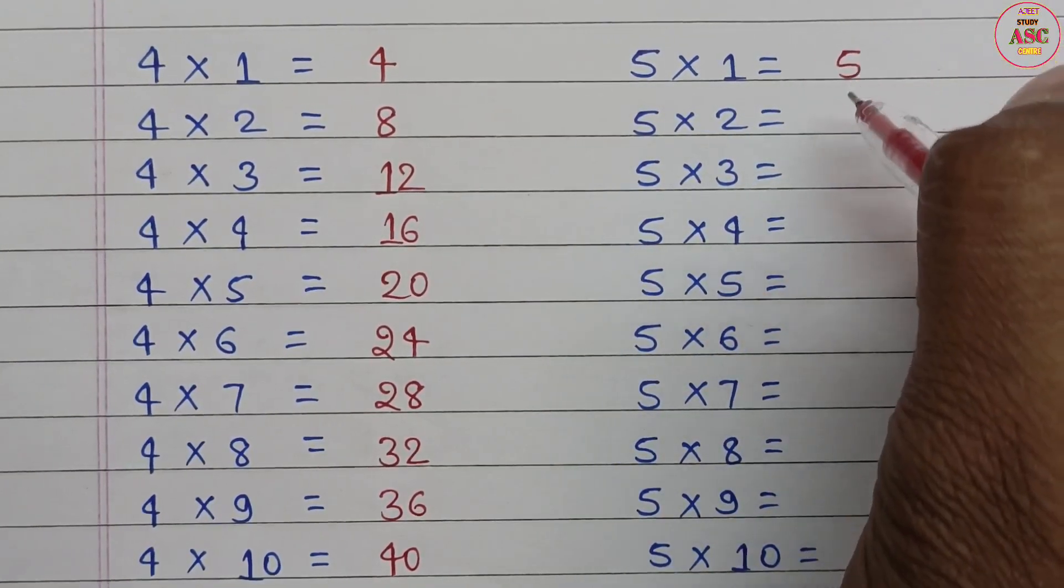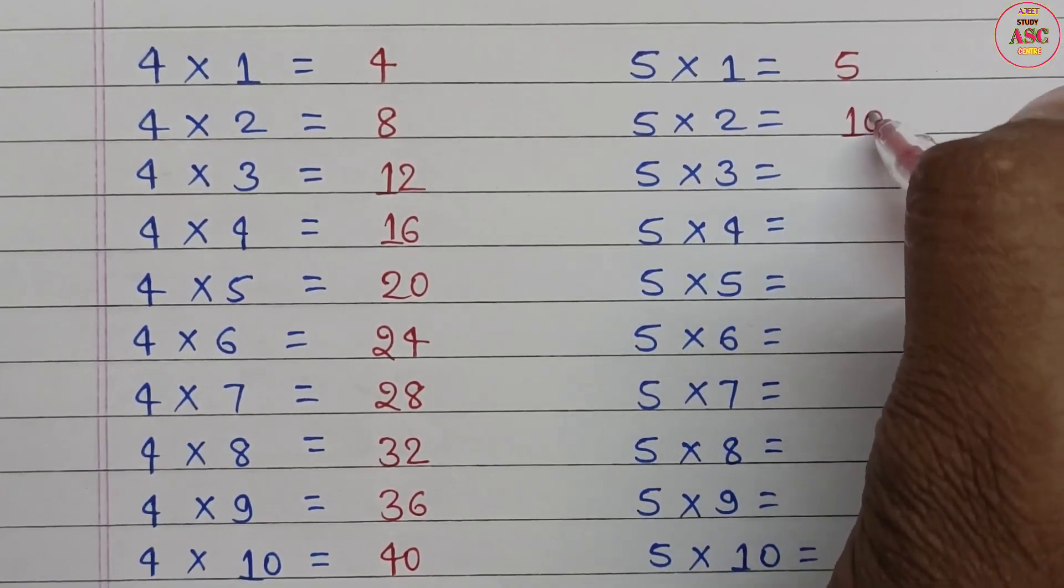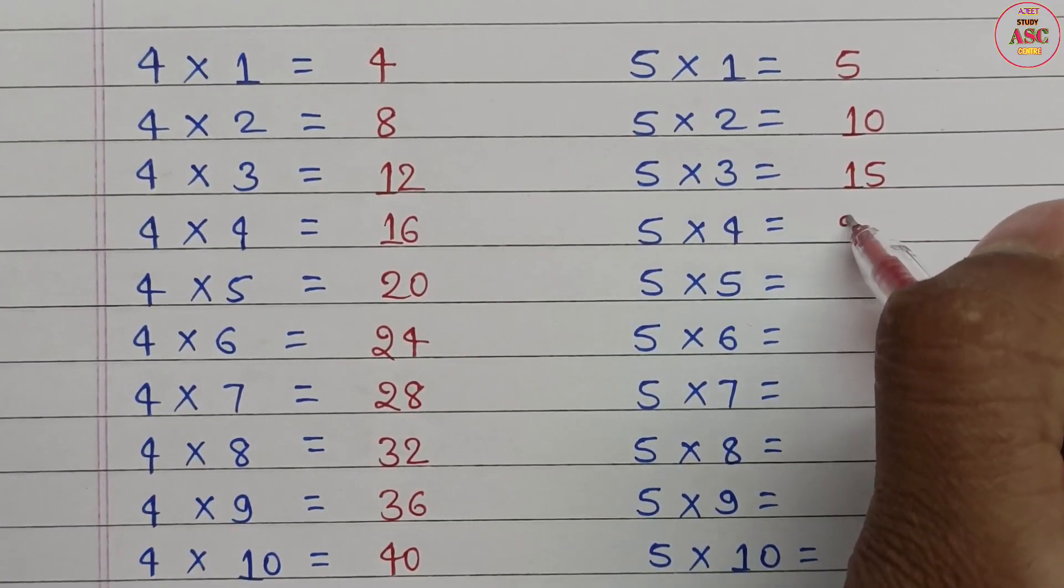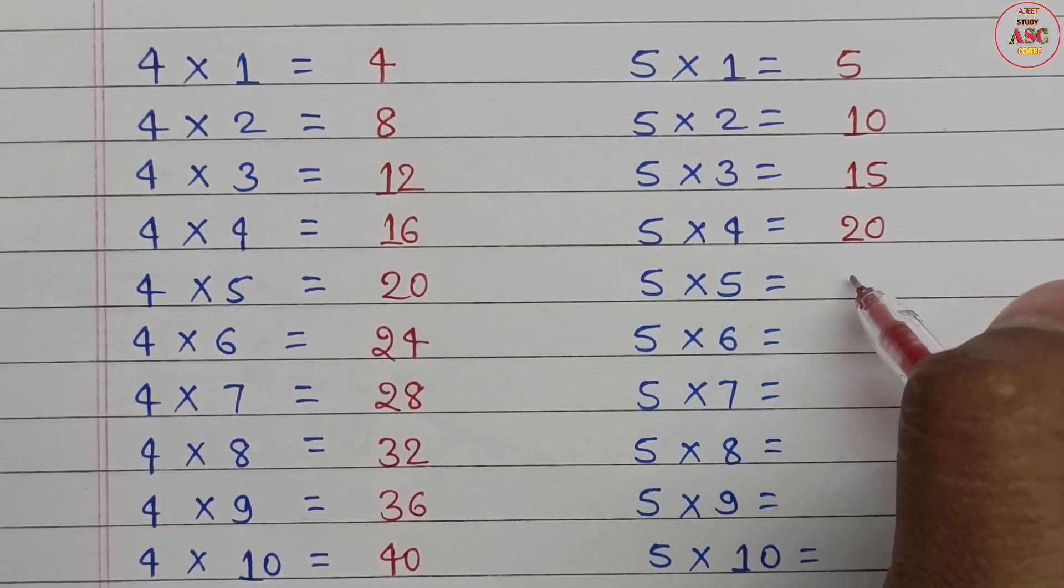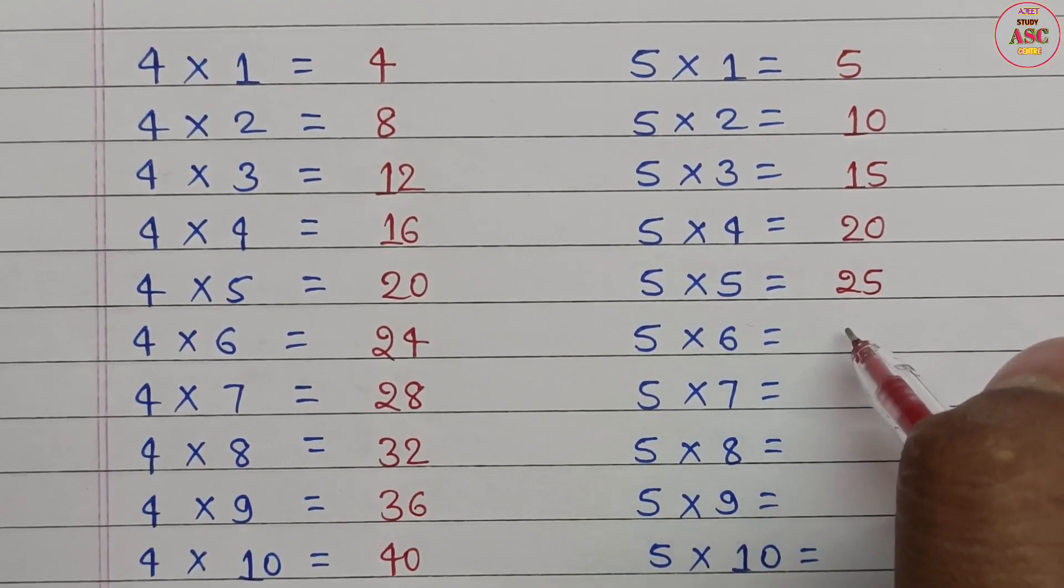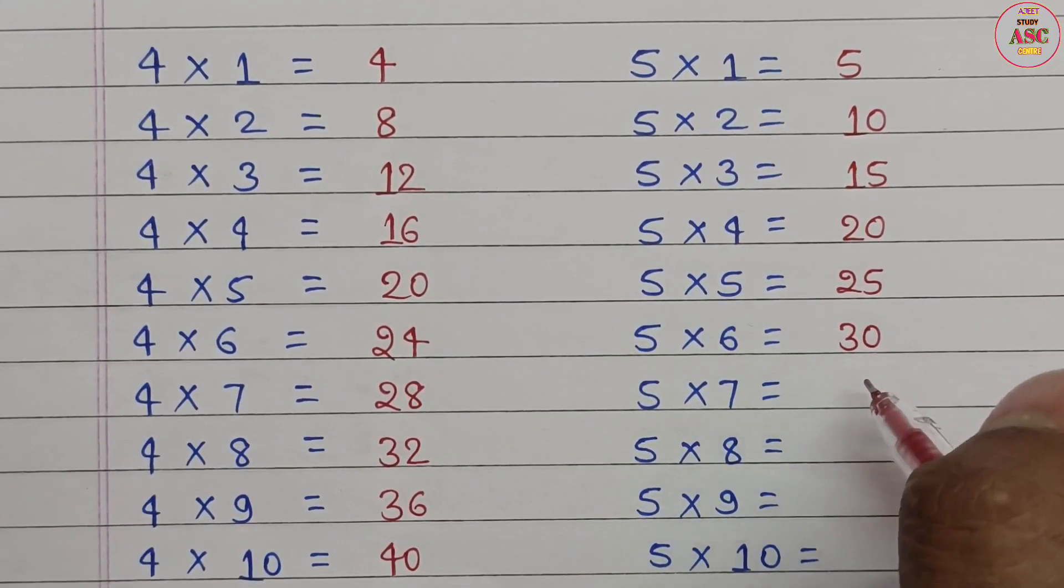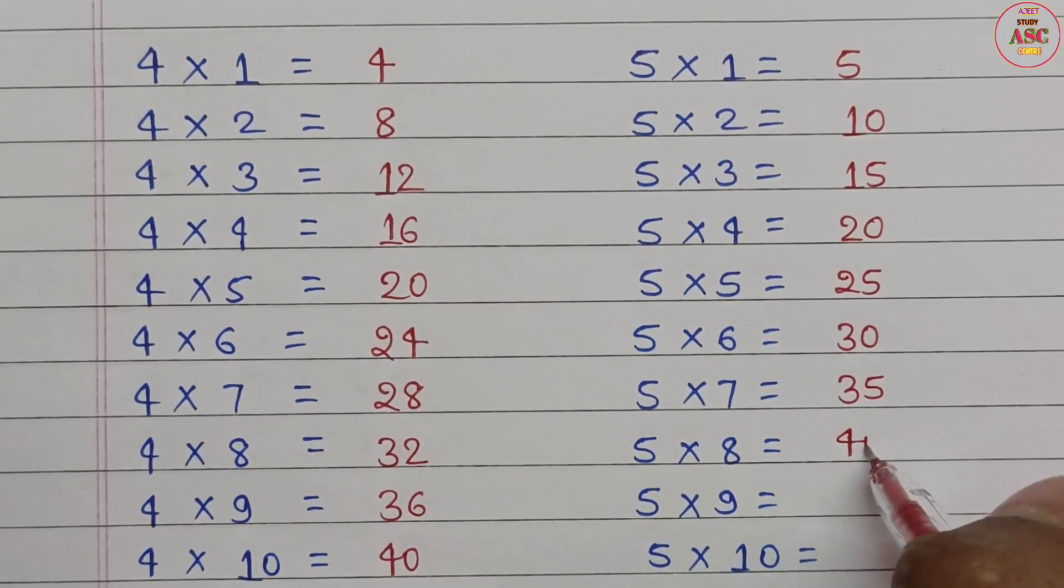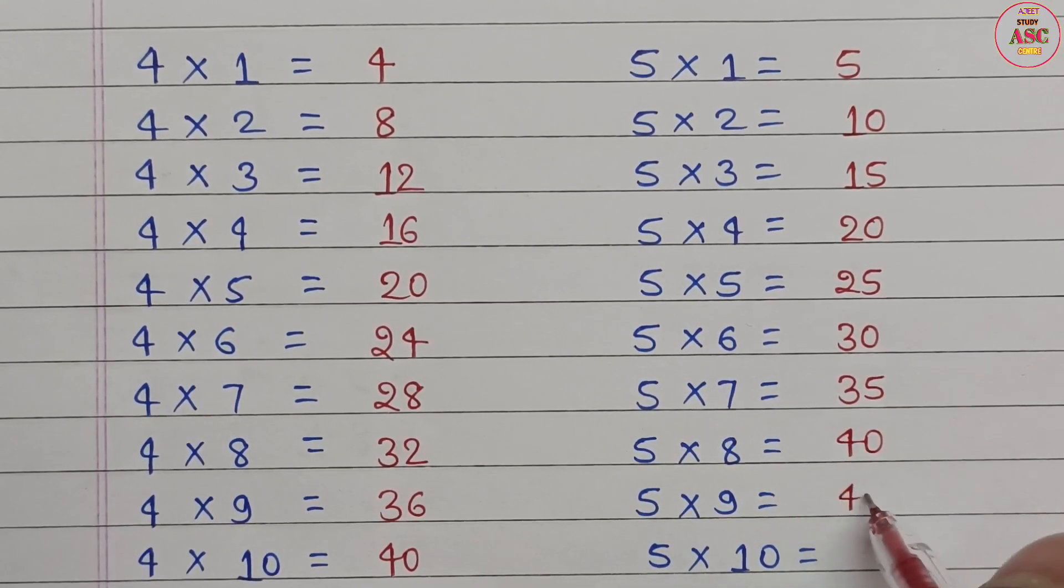5 times 1 equals 5. 5 times 2 equals 10. 5 times 3 equals 15. 5 times 4 equals 20. 5 times 5 equals 25. 5 times 6 equals 30. 5 times 7 equals 35. 5 times 8 equals 40. 5 times 9 equals 45. 5 times 10 equals 50.